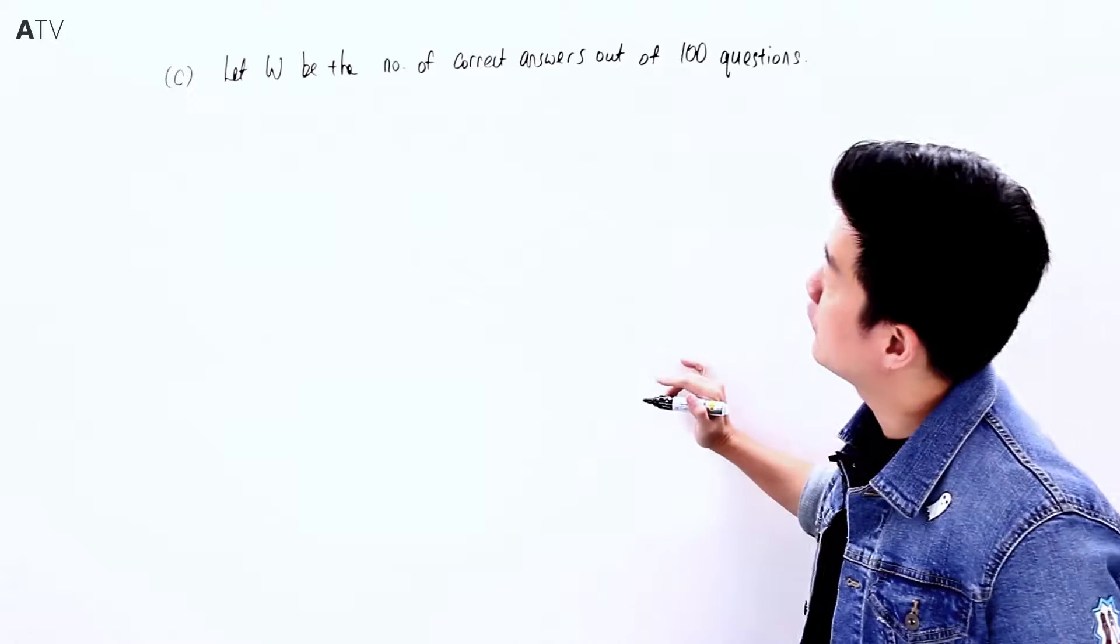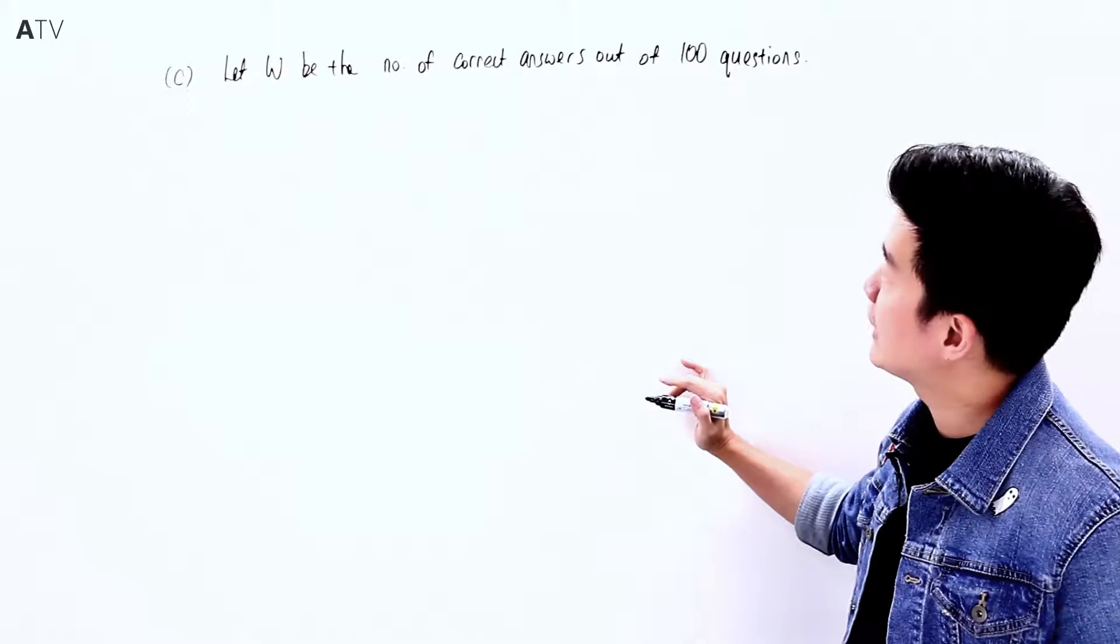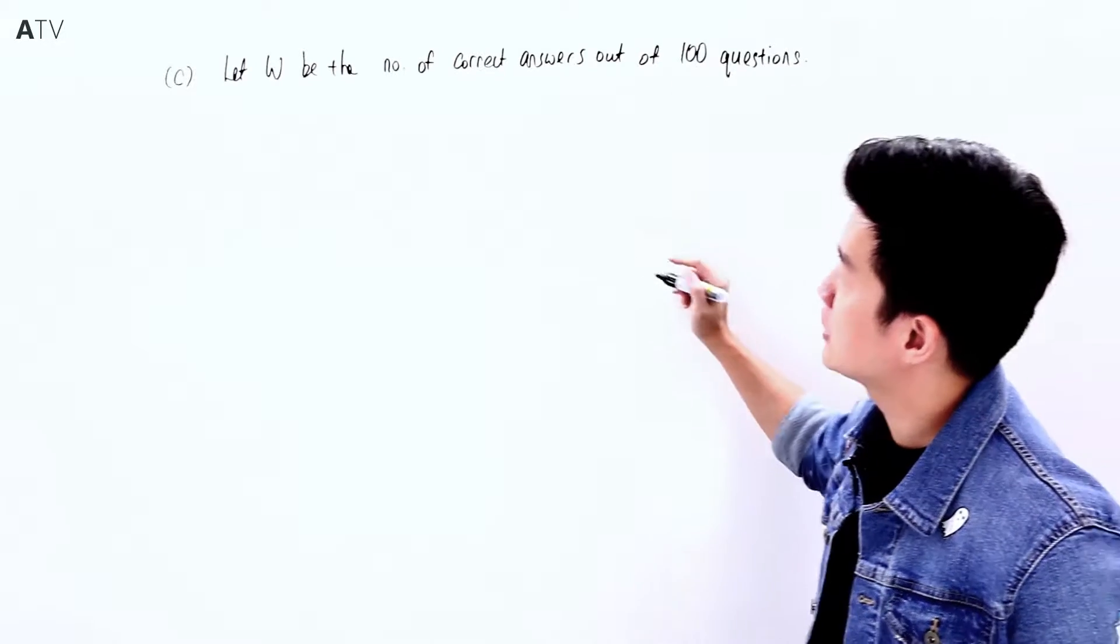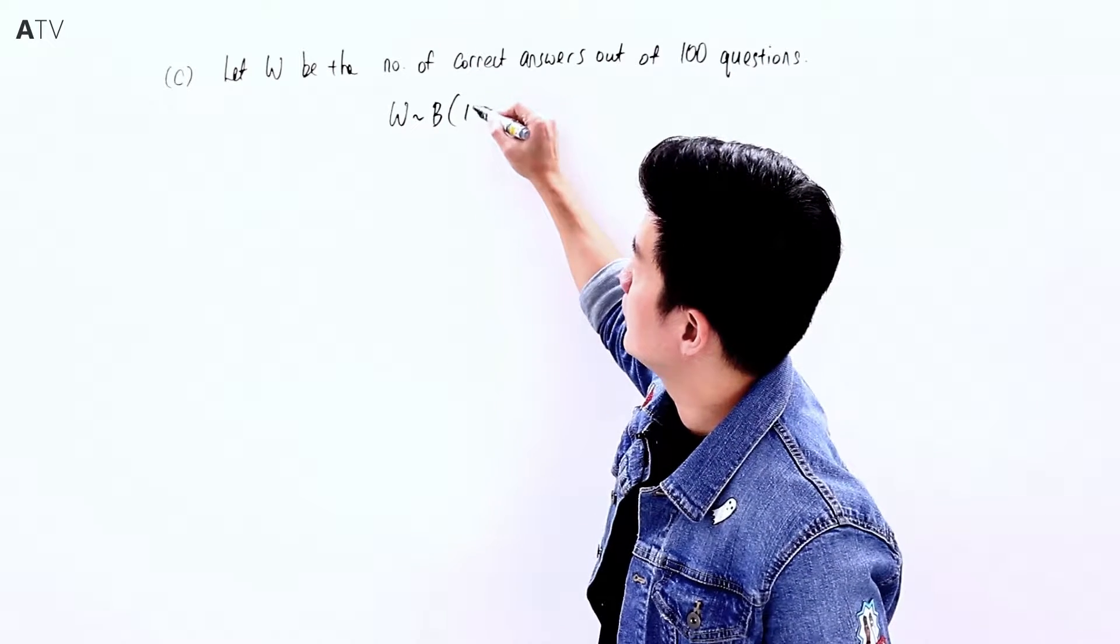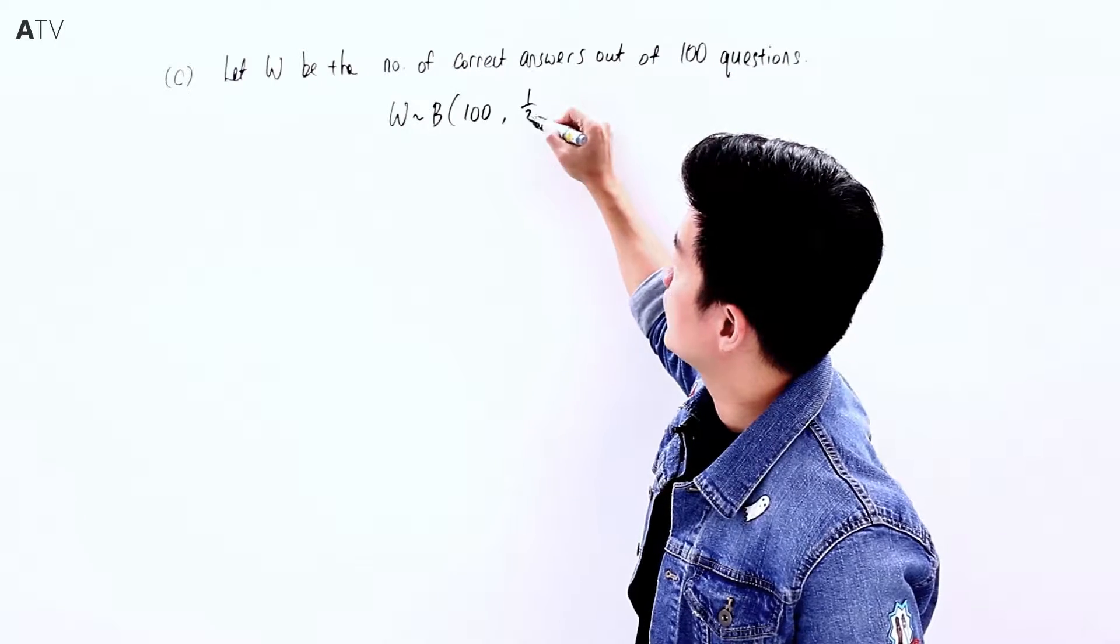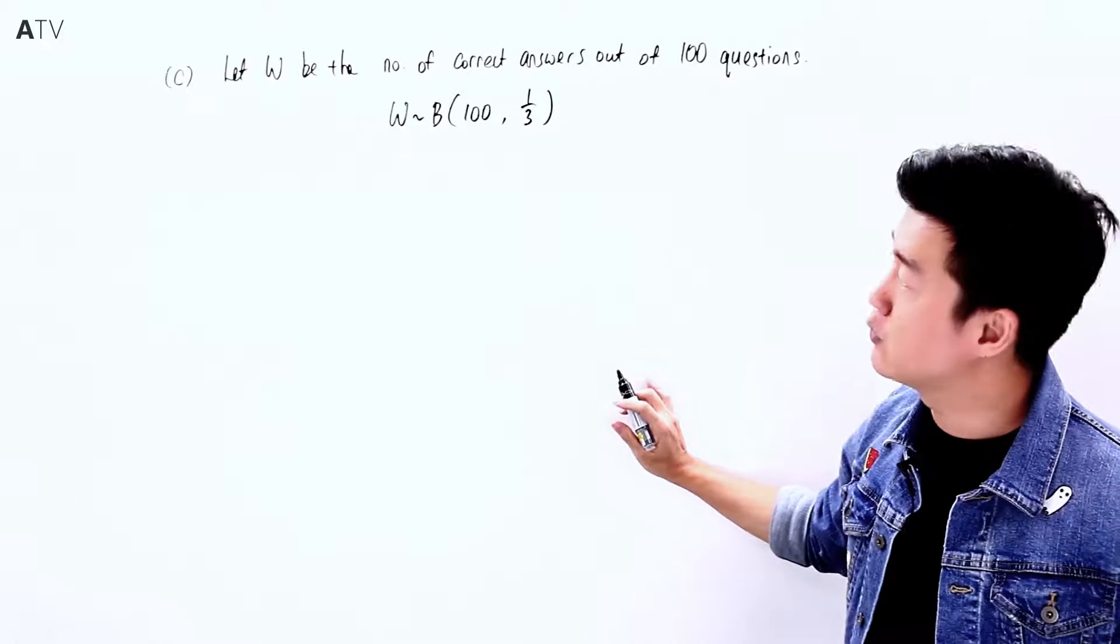Let W be the number of correct answers George gets out of 100 questions. Then W follows a binomial distribution with n = 100 trials and probability of success p = 1/3.